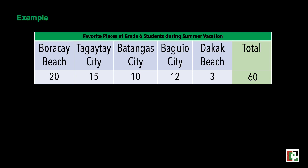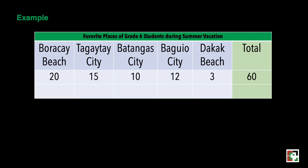We will place our data in a table. We have a total of 60 students surveyed. Let's find the fraction of each summer place to visit. We will divide each by the total: 20 over 60, 15 over 60, 10 over 60, 12 over 60, and 3 over 60.